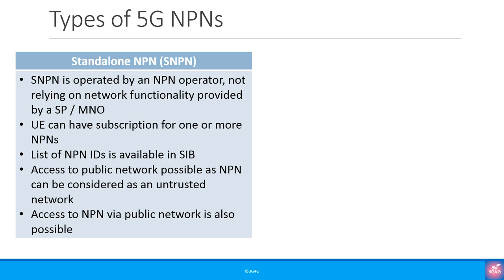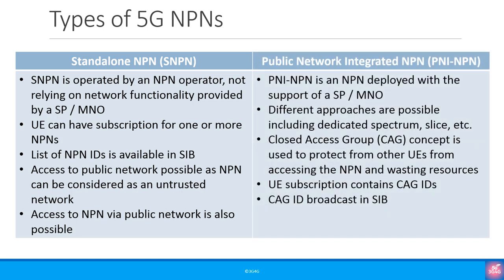The first type of NPN is the standalone NPN or SNPN. SNPN is operated by an NPN operator and is independent of the service provider or MNO — it does not rely on network functionality provided by them. A UE can have a subscription to one or more non-public networks; the list of NPN IDs is available in the SIM. Access to a public network is also possible as the NPN can be considered an untrusted network. Access to the NPN via the public network is also possible.